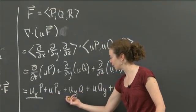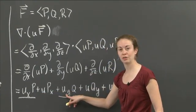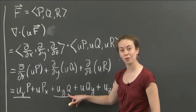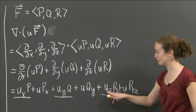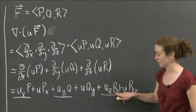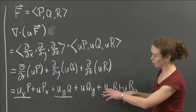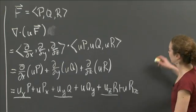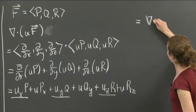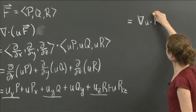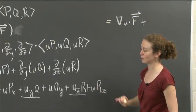Notice that this underlined component is the first component of gradient u and the first component of F. And this underlined component is the second component of gradient of u and the second component of F. And this third underlined component here is the third component of grad u and the third component of F. So if I take those three components together, I'm going to write the equals up here, I get exactly grad u dotted with F. That's the first thing I get.